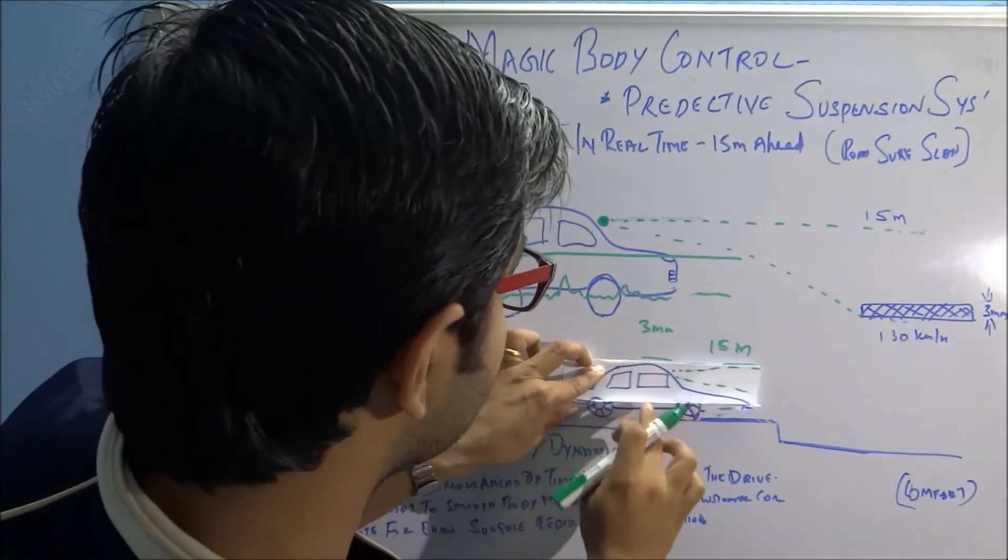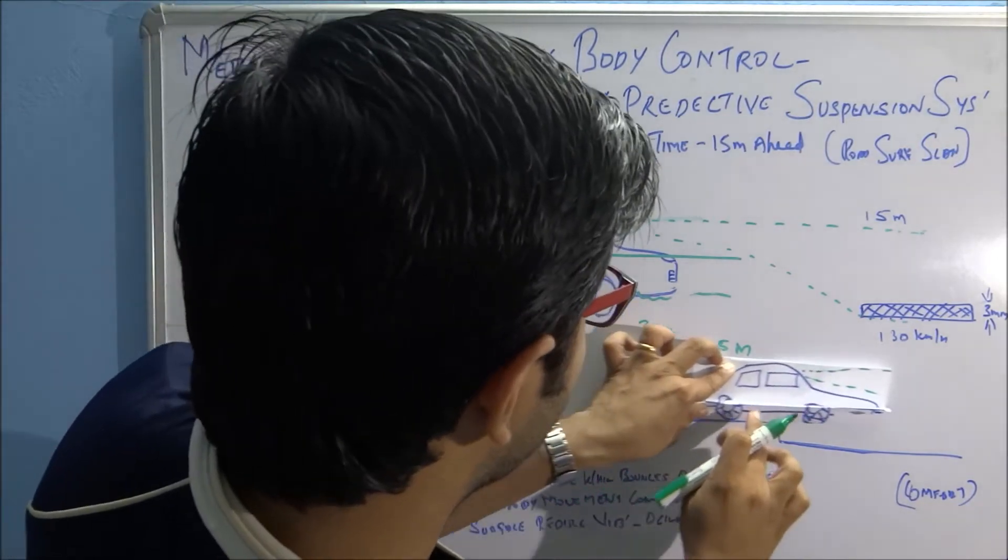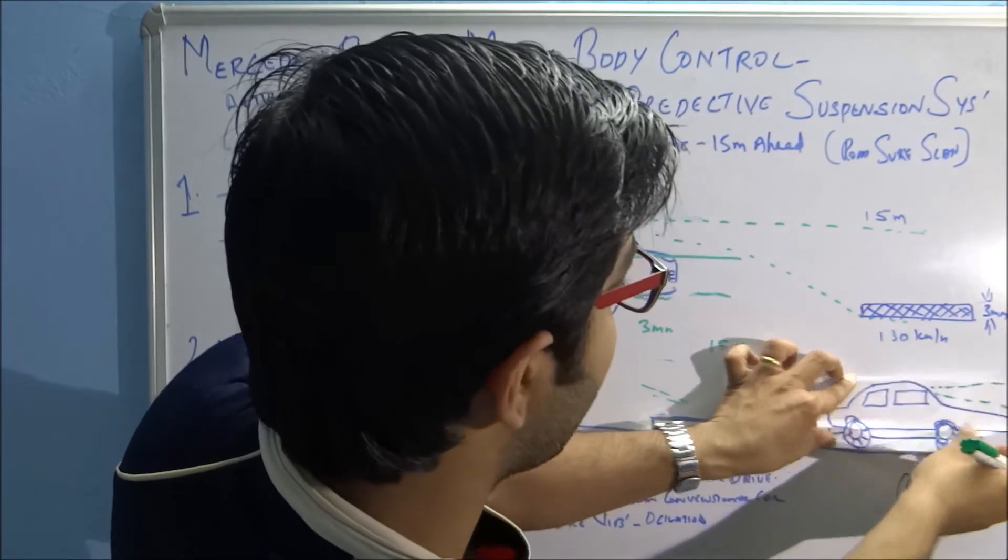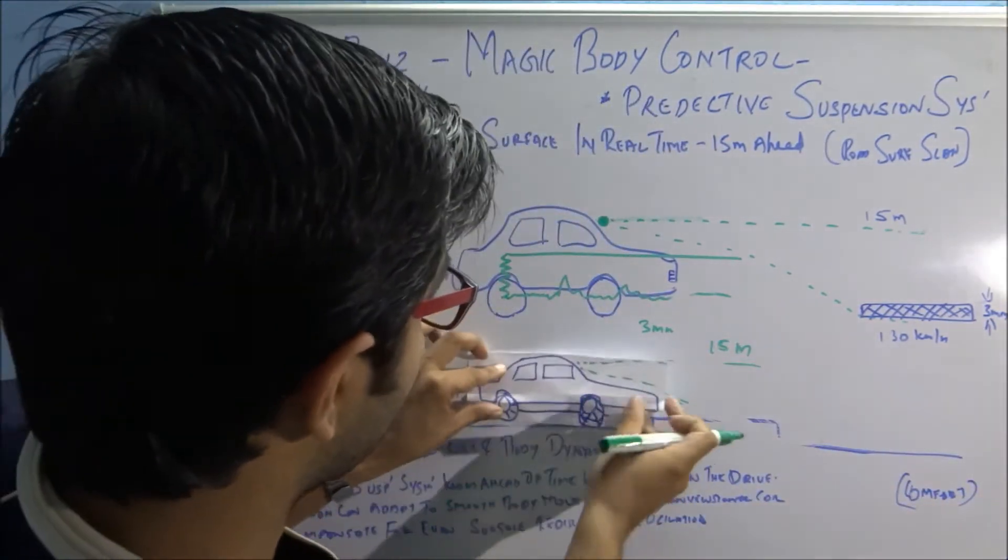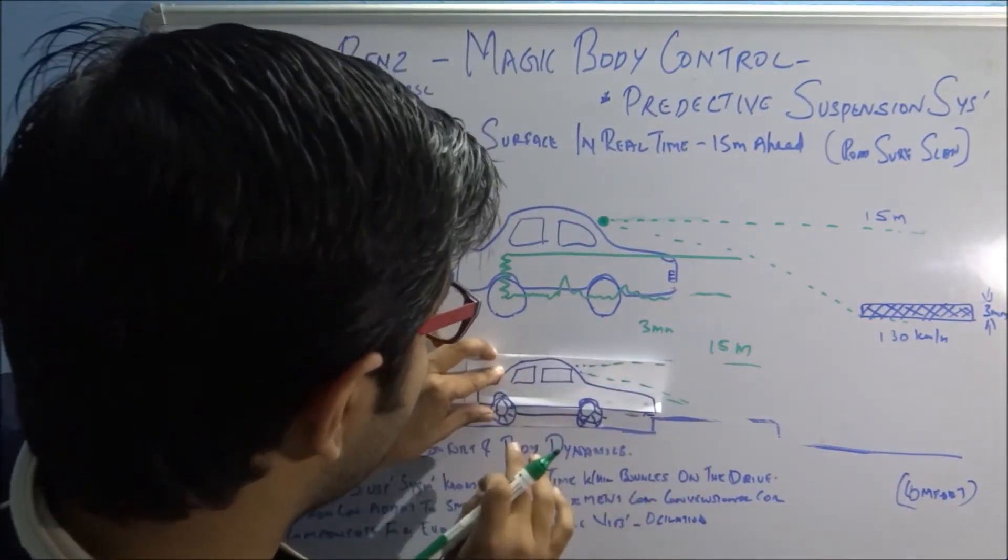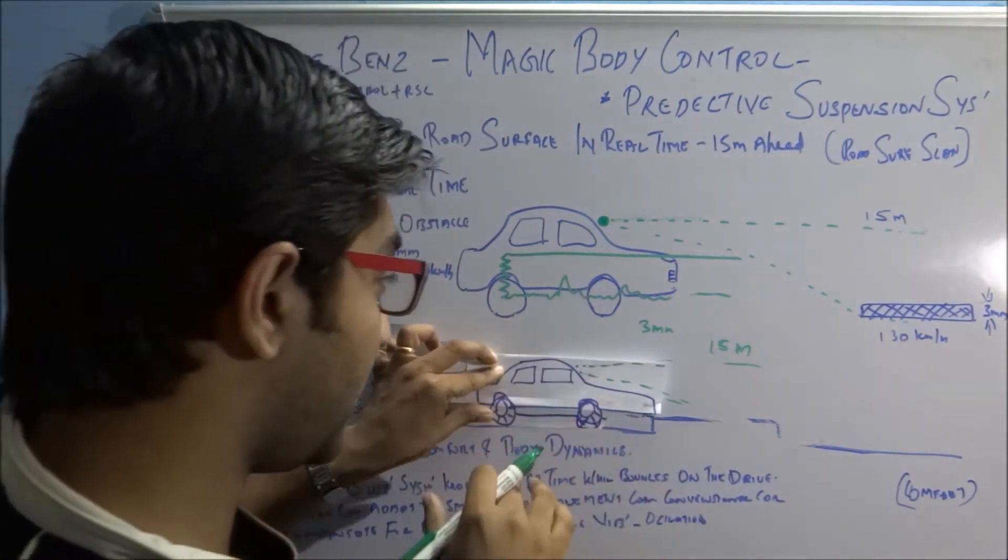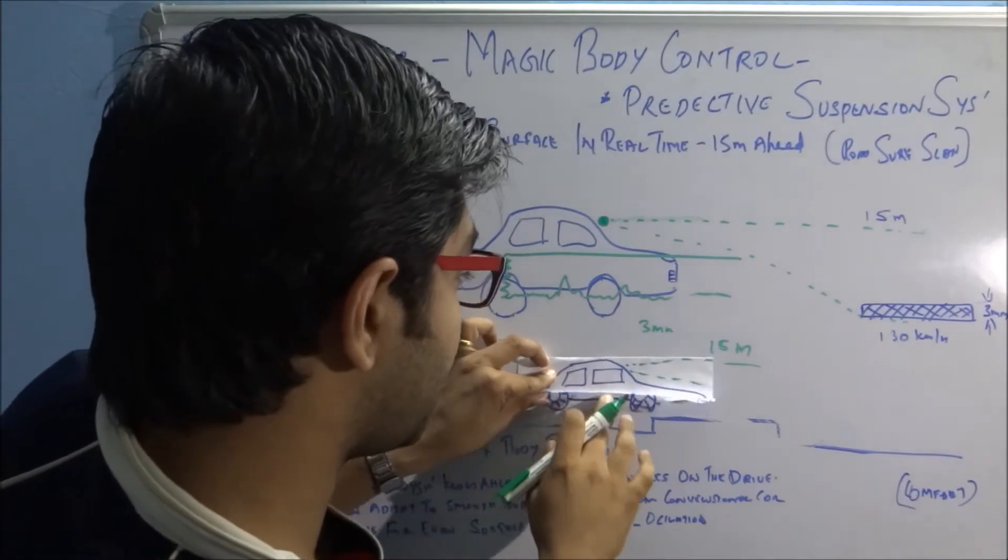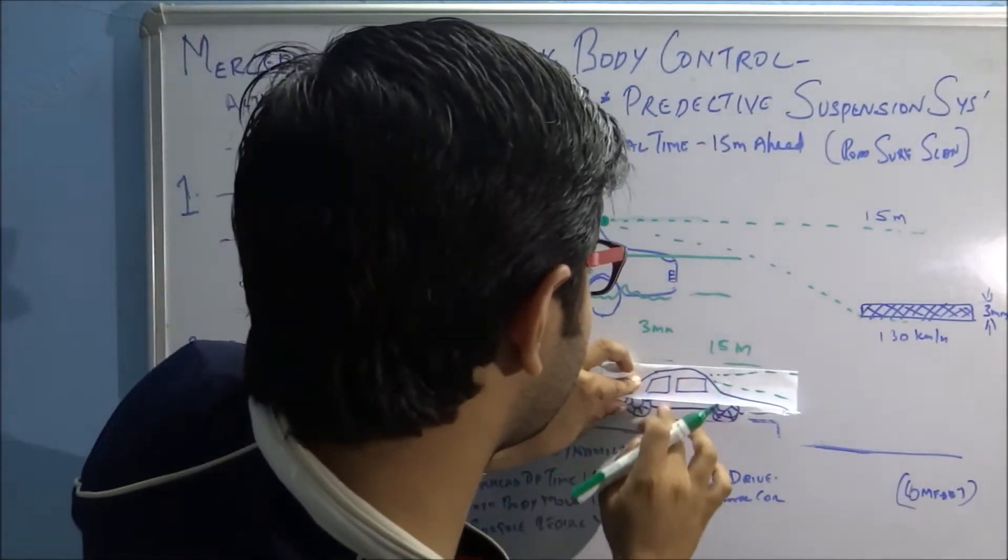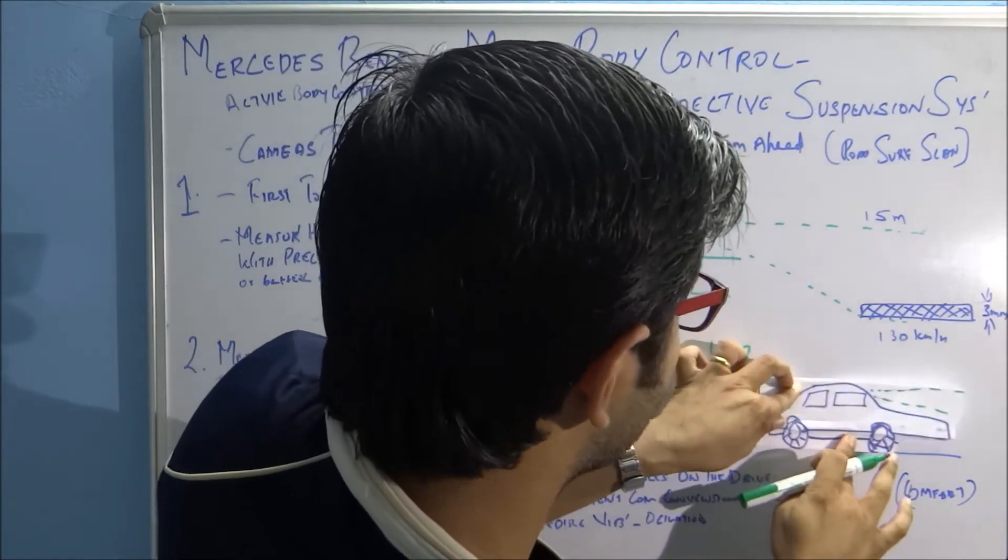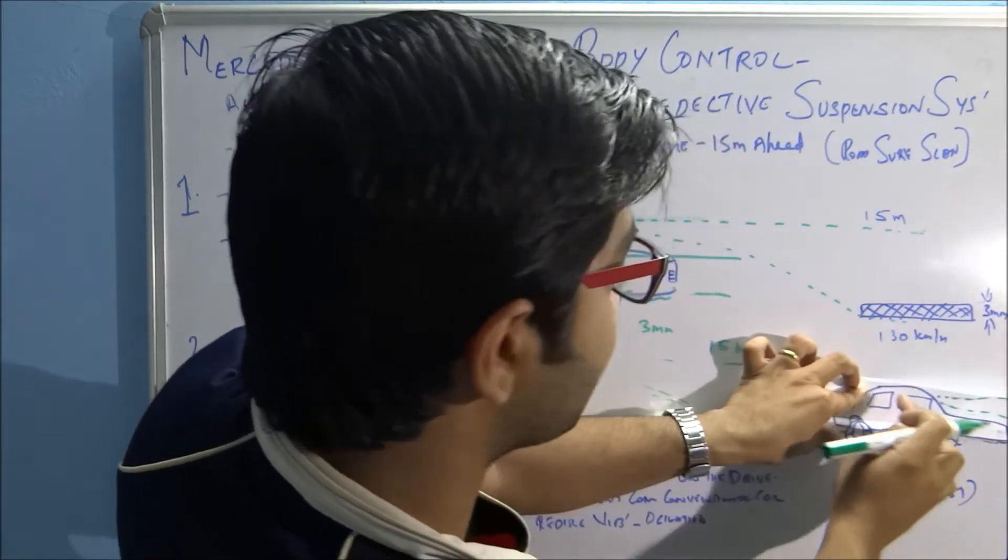You can see when it comes over here again, the suspension understands that it's over, so it comes down and travels smoothly. I'll show you once again: it senses the road surface and can predict the hump. When it moves closer, the suspension moves up and travels, and the body doesn't move. There is no shake for the body, and then the suspension moves downwards and stabilizes.